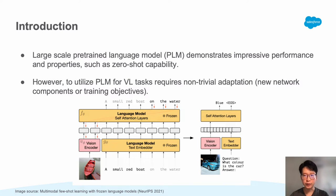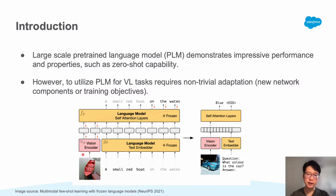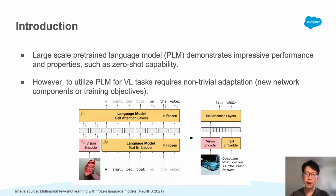Recently, large-scale pre-trained language models have demonstrated impressive performance and properties, such as zero-shot learning capability, and various works have leveraged PLMs for zero-shot VQA. However, most of these methods require additional adaptations, because PLMs cannot understand images. So a vision encoder is often trained on image-text pairs using language modeling objectives to incorporate the vision modality into the PLM. This adaptation process is non-trivial and often requires new network components and new training objective design.